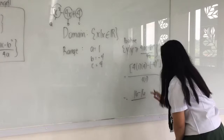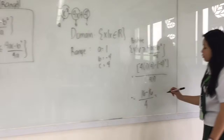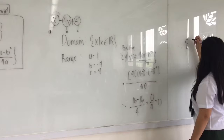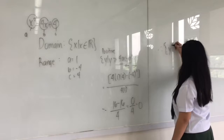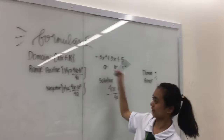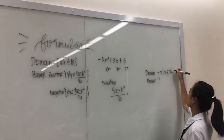4 times 1 is equal to 4. 16 minus 16 is equal to 0, all over 4, which is equal to 0. So the final answer is: y such that y is greater than or equal to 0. For the domain, x such that x is equal to all real numbers.